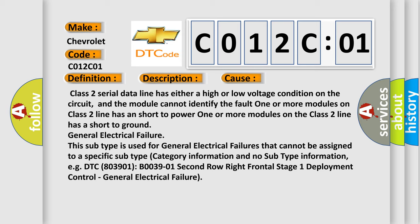One or more modules on the Class 2 line has a short to ground general electrical failure. This subtype is used for general electrical failures that cannot be assigned to a specific subtype category information and no subtype information, e.g. DTC B0039-01 Second Row Right Frontal Stage 1 Deployment Control, General Electrical Failure.